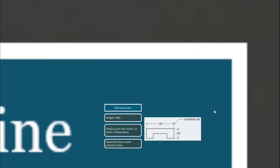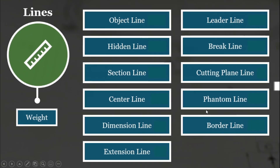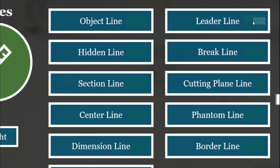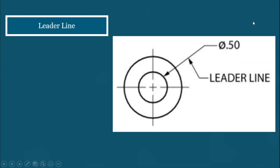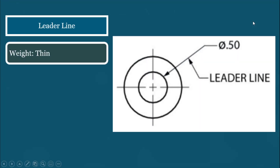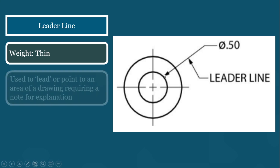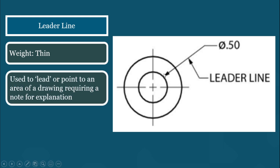Next we have leader lines, which are also thin lines. These lines are used to lead or point to an area of a drawing requiring a note for explanation.